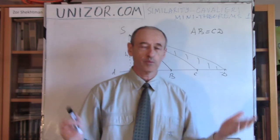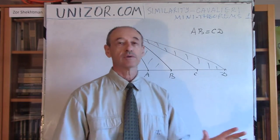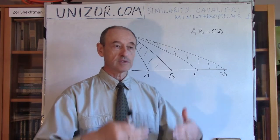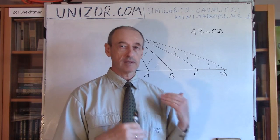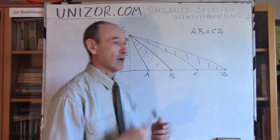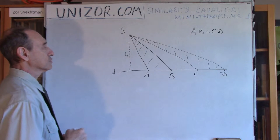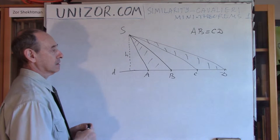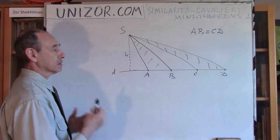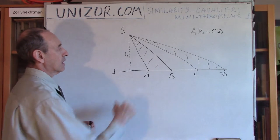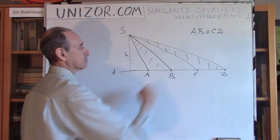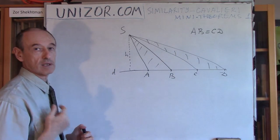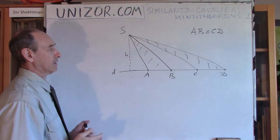So why bother? Well, let's consider you don't know this formula. I would like to prove, using the Cavalieri Principle, that the areas are the same. To do this, I have to prove that any line parallel to the base line cuts across these two triangles and the sections are of the same length.